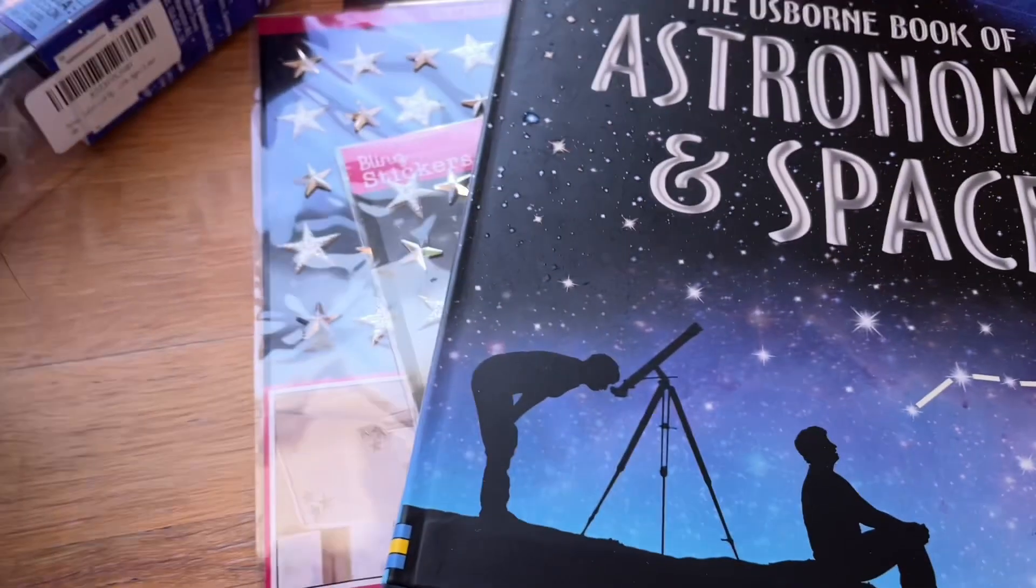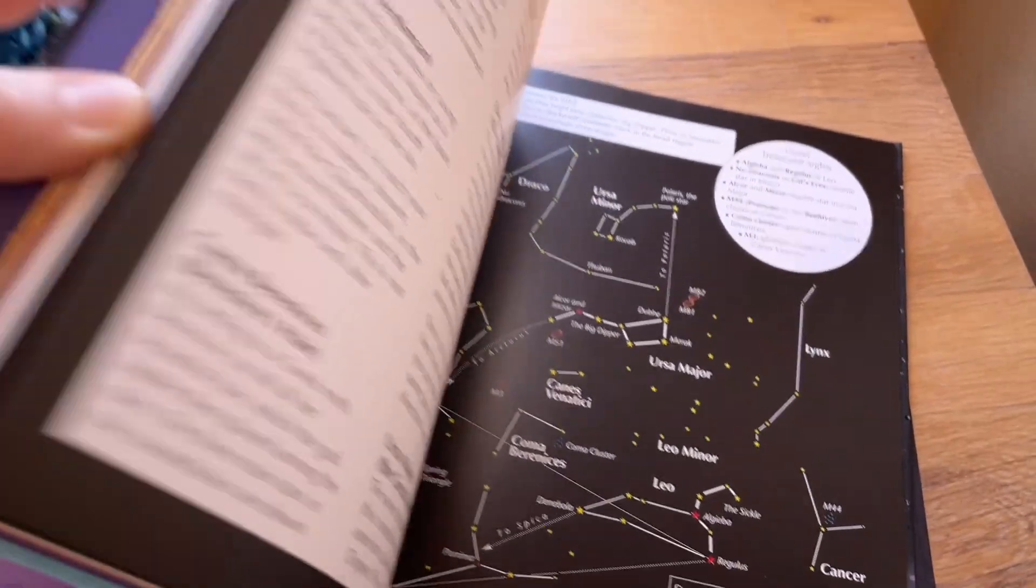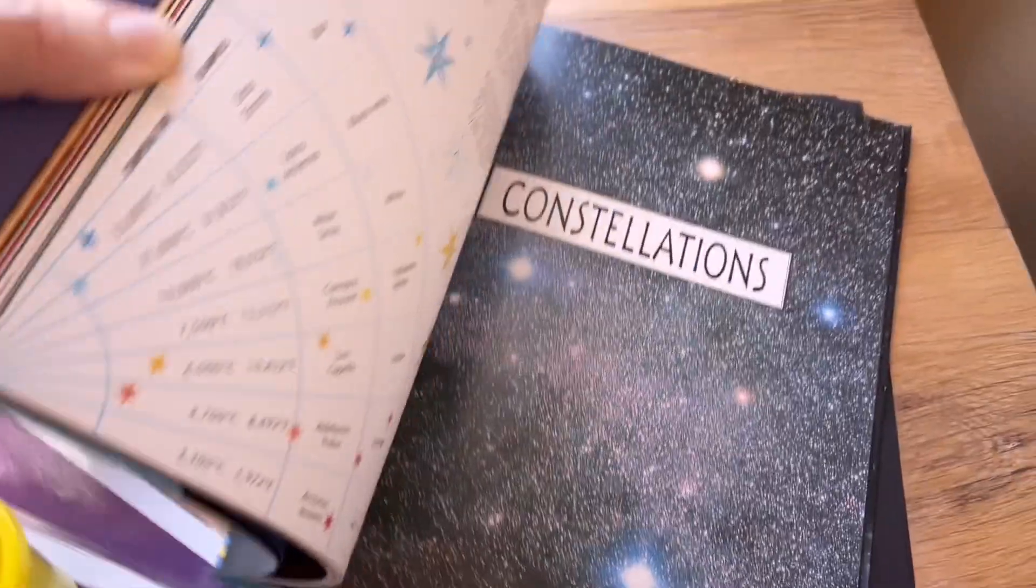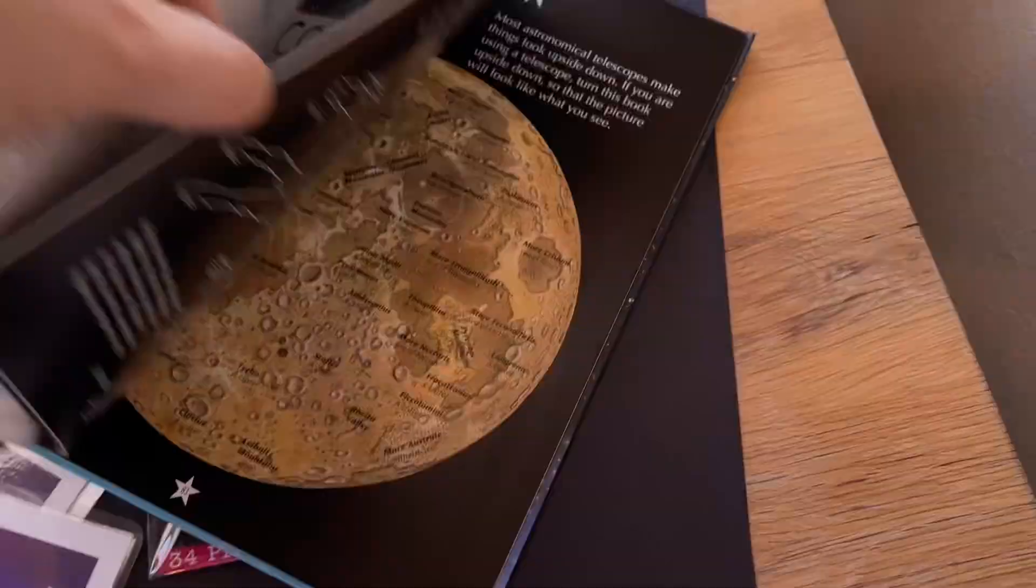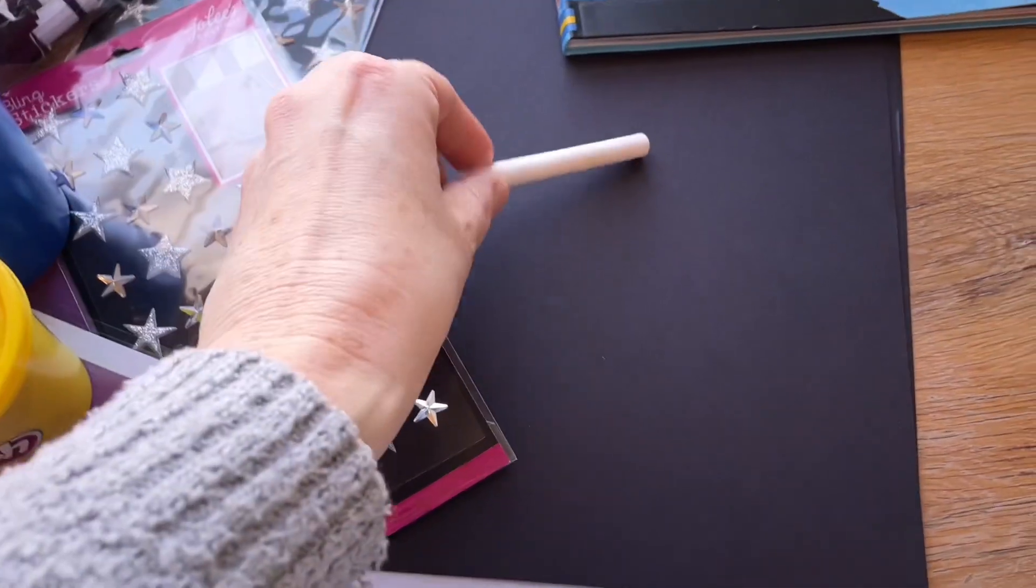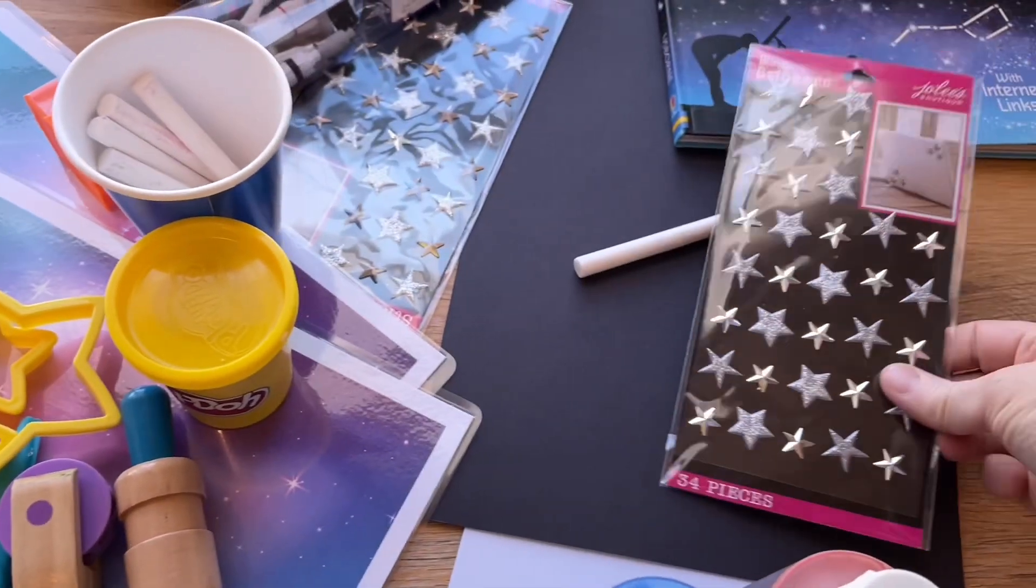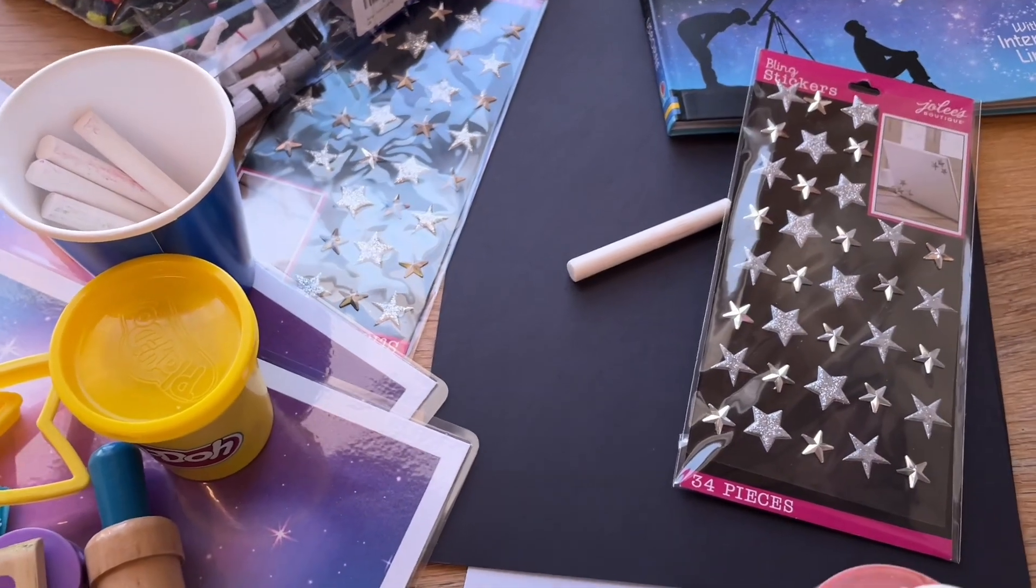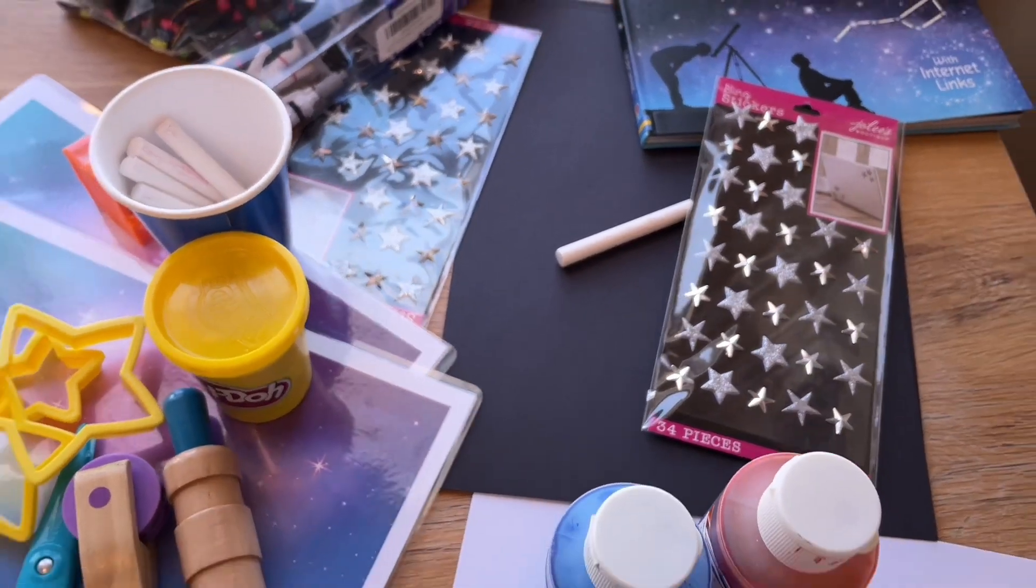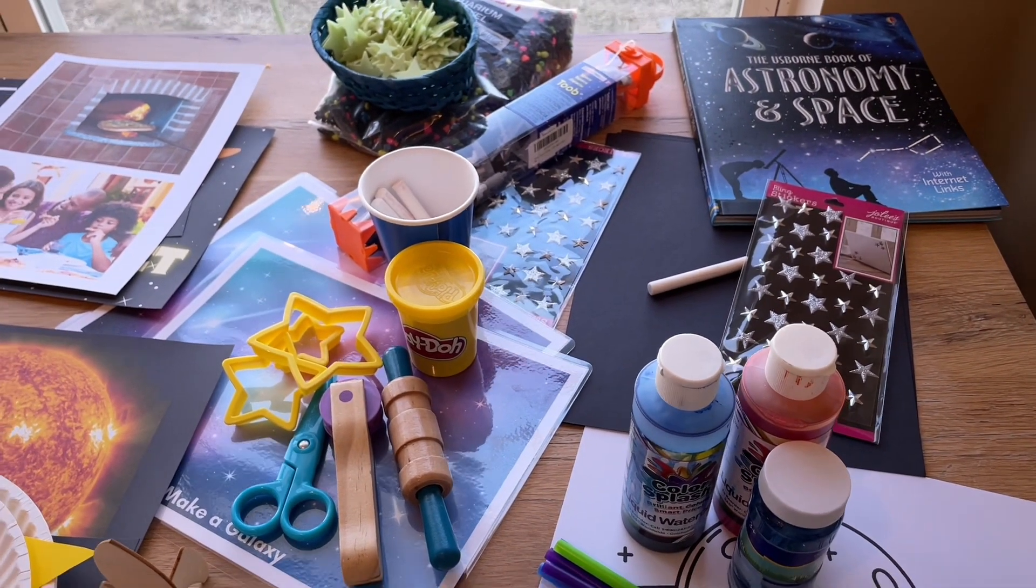For this one we're going to be doing some constellation art. I have this really nice Usborne book and in the back it has some great pictures and some descriptions of some different constellations. I have these kind of 3D stickers that I found at Walmart. I'll just let the children put these on their pages making their own stars in the sky and then I'll give them a piece of chalk so that they can connect their stars and make a constellation. Very simple but a very meaningful project.